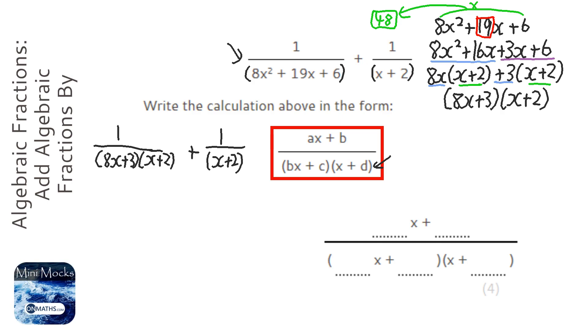Now you notice that actually that bracket is the same. So all I need to do is times top and bottom here by 8x plus 3. I'm squishing it a little bit. And it will have common denominator.